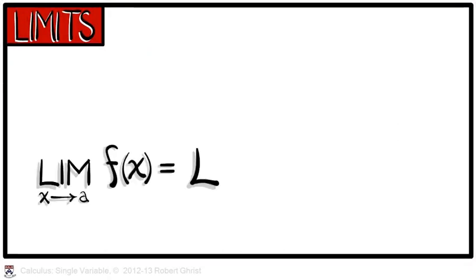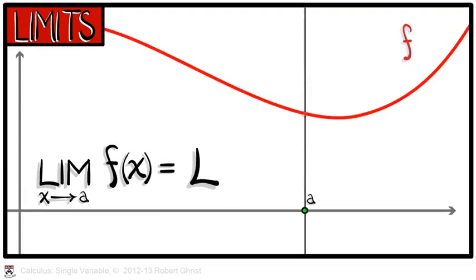But what does it mean to say the limit as x approaches a of f of x equals l? I'm sure you have an image in your head that as x gets closer and closer to a, f of x gets closer and closer to l. Perhaps you remember that it doesn't matter whether you approach from the left or from the right. Perhaps you remember that it doesn't matter what the actual value of the function is at x equals a. What matters is the limit.